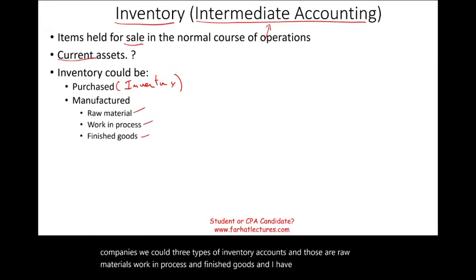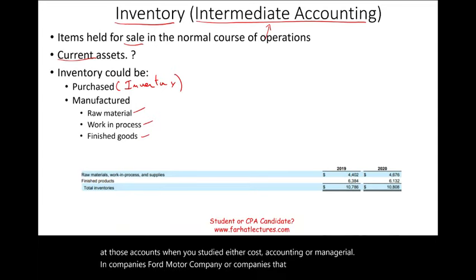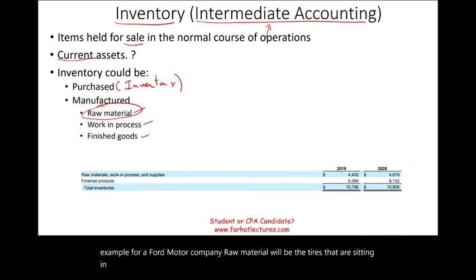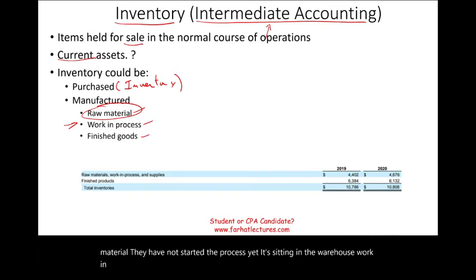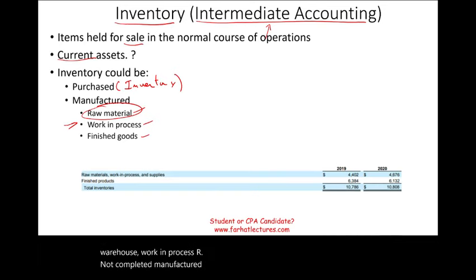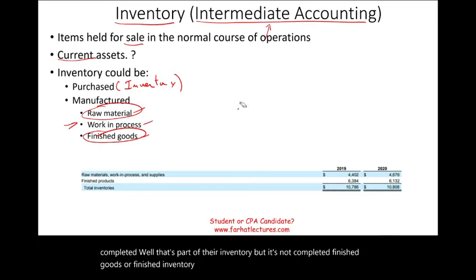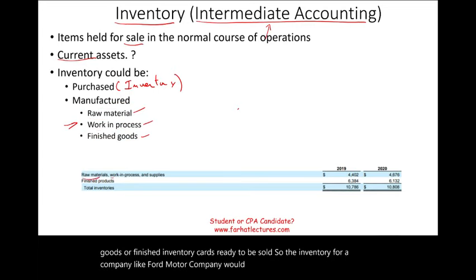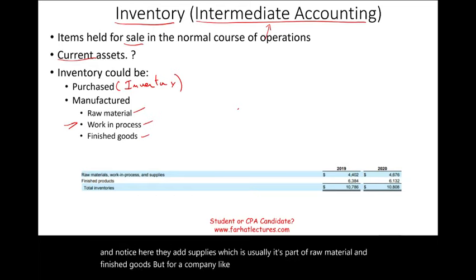You likely encountered those accounts in cost accounting or managerial accounting. Companies like Ford Motor Company will have those accounts. Raw material, for Ford, would be tires, batteries, and radios sitting in the warehouse — the process has not started yet. Work in process consists of partially completed cars — for example, a car that's 70% completed at the end of the period. Finished goods are cars ready to be sold. A company like Walmart, by contrast, usually has just one line: inventory.